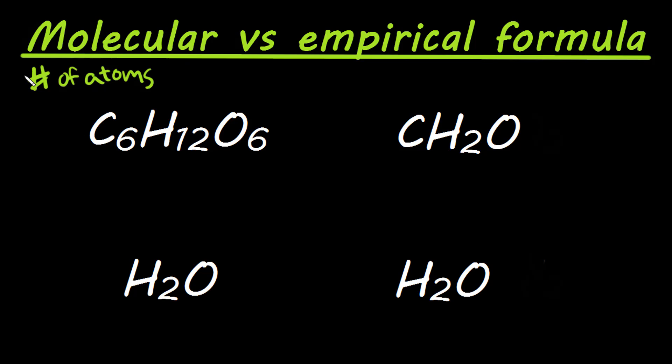So molecular shows you the exact number of atoms in that molecule, whereas the empirical formula is going to give you the smallest ratio. So smallest ratio of those atoms in a molecule.